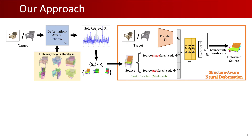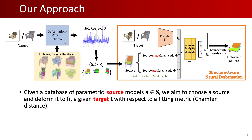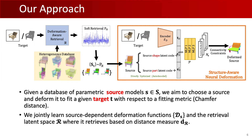Here is an overview of our approach. Given a database of parametric source models, we aim to choose a source and deform it to fit a given target, with respect to a fitting metric — chamfer distance in our case. We jointly learn the set of source-dependent deformation functions DS and the retrieval latent space R, where retrieval is based on distance measure DR.